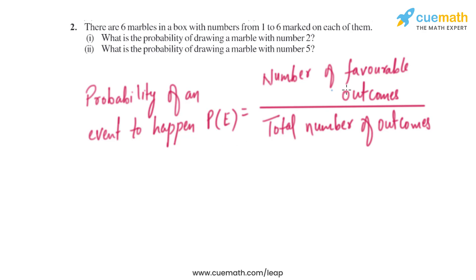If we look into the first part, the number of favorable outcomes is basically number 2, which is 1. So the probability of an event to happen will be 1 divided by the total number of outcomes. The total number of outcomes, since they are marked from 1 to 6, is 6. So it's basically 1 over 6.